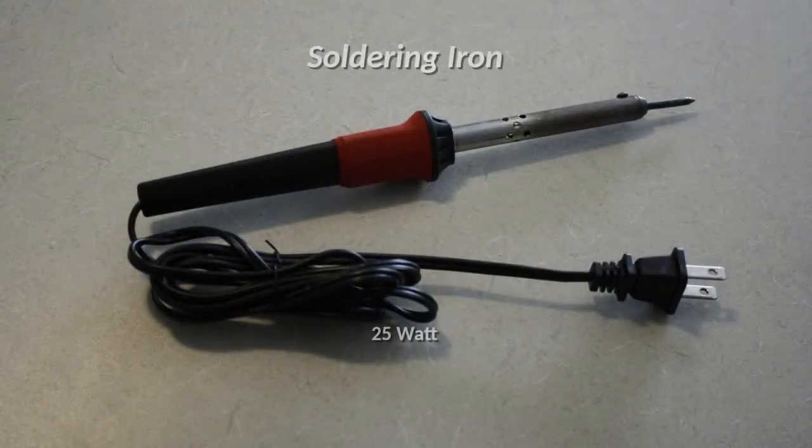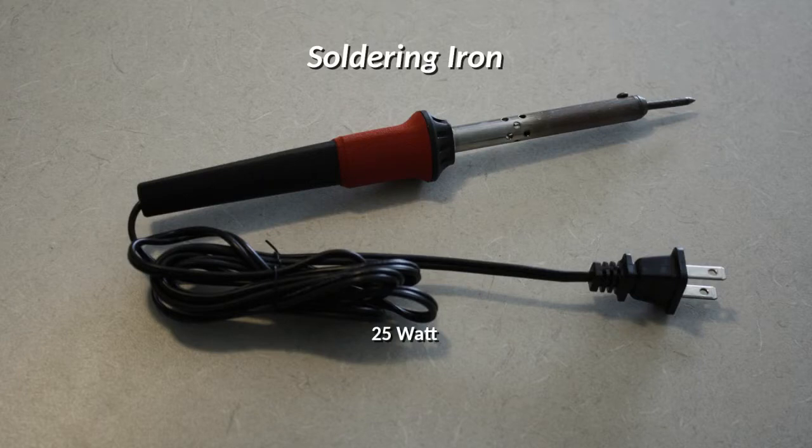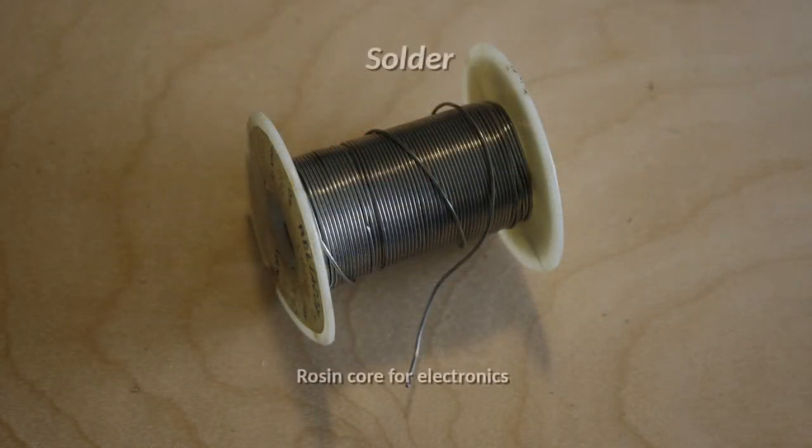Next, you'll need some tools. If you do electronics, you probably already have these. Use a 25-watt soldering iron designed for electronics. With that, use rosin core solder, also designed for electronics. Some solder has an acid core for doing plumbing. You don't want to use that for this project.